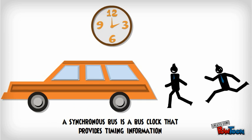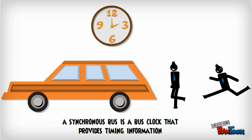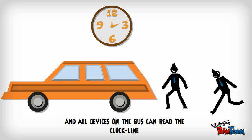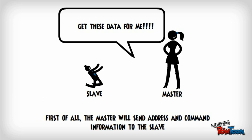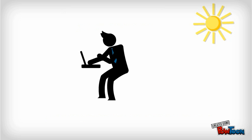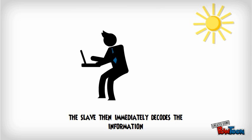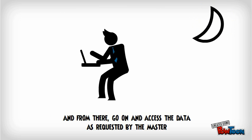A synchronous bus is a bus with a clock that provides timing information, and all devices on the bus can read the clock line. First, the master will send address and command information to the slave. The slave then immediately decodes the information and from there goes on and accesses the data as requested by the master.